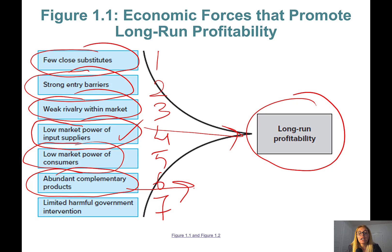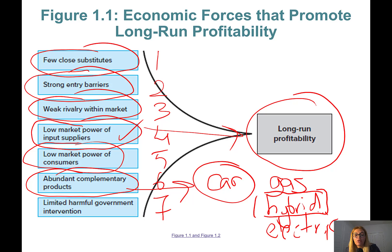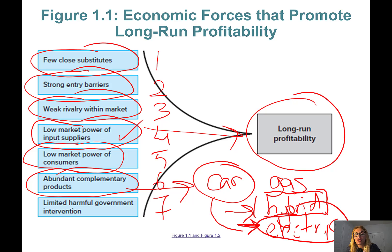Number six is abundant complementary products. Does what you produce have lots of products that go with it? For example, if you're a car manufacturer whose cars only run on gas versus a hybrid or electric option — hybrid has the most flexibility. If you produce an electric car but there are not enough electric charging stations, there are not many complementary products to support your product. The seventh factor is limited harmful government intervention — this is self-explanatory. Government is not targeting industries or limiting your behavior in the market.